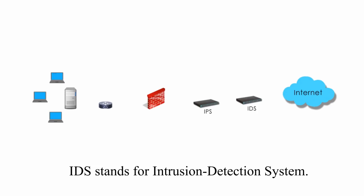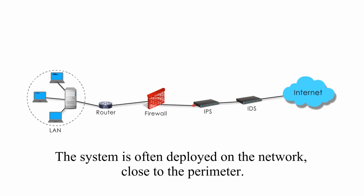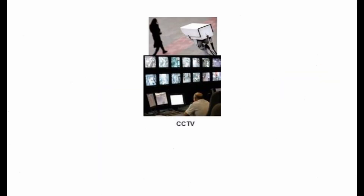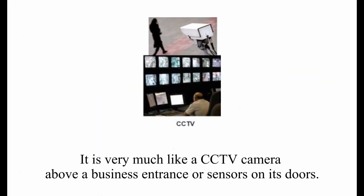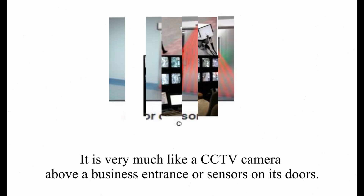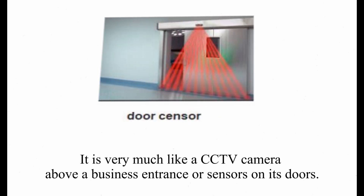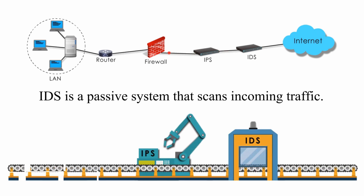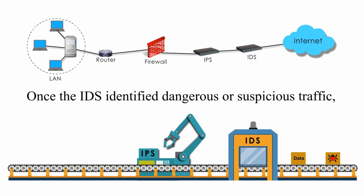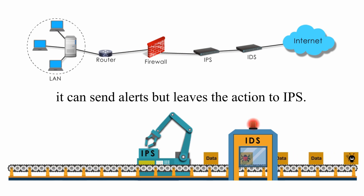IDS stands for Intrusion Detection System. The system is often deployed on the network close to the perimeter. It is very much like a CCTV camera above a business entrance or sensors on its doors. IDS is a passive system that scans incoming traffic. Once the IDS identifies dangerous or suspicious traffic, it can send alerts but leaves the action to IPS.